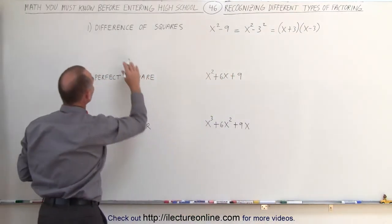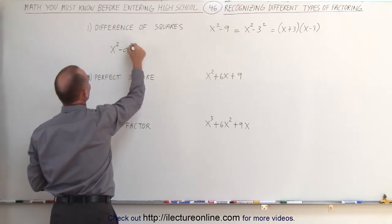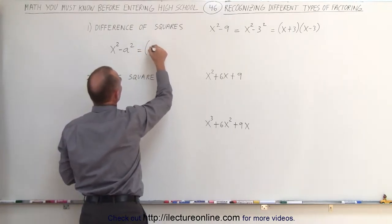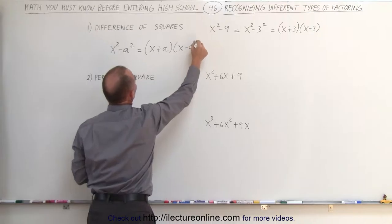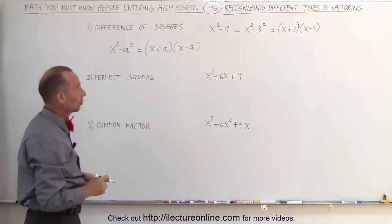Therefore, the general form of the difference of squares is x squared minus a square where a can be any number, and that can then be written or factored as x plus a times x minus a. It's important to recognize the difference of squares when you're asked to factor.